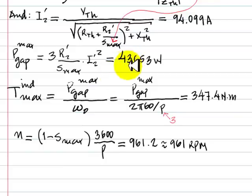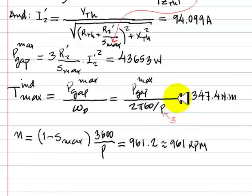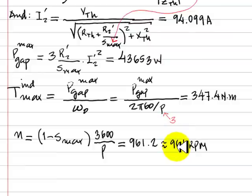To find that torque, we divide the gap power by omega naught. Omega naught is 2π times the frequency (60 Hz) divided by the number of pole pairs — we have 6 poles, so p = 3. That tells us the maximum torque is 347 Nm. The velocity at that maximum torque slip is (1 − s) times the synchronous velocity, which is 3600 divided by p, giving 961 RPM. That takes care of part A.